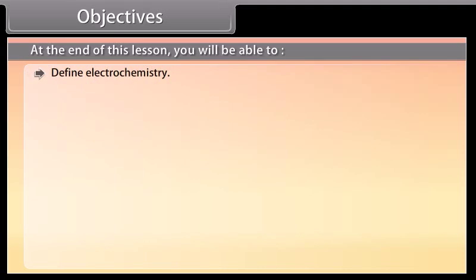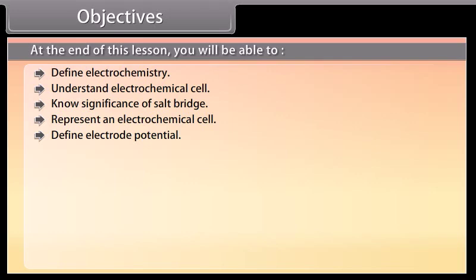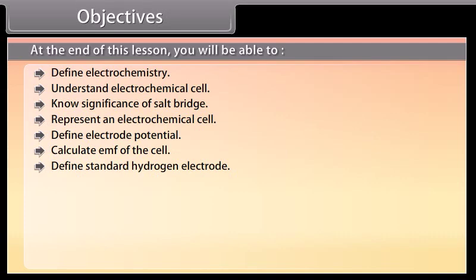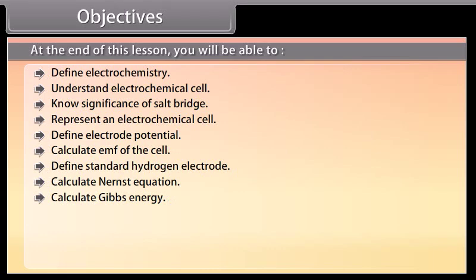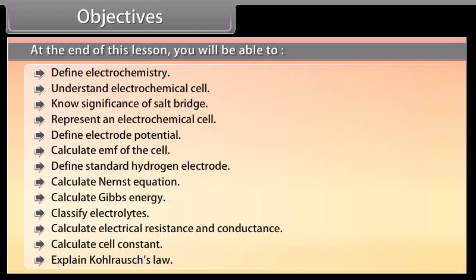Objectives. At the end of this lesson, you will be able to: define electrochemistry, understand electrochemical cell, know significance of salt bridge, represent an electrochemical cell, define electrode potential, calculate EMF of the cell, define standard hydrogen electrode, calculate Nernst equation, calculate Gibbs energy, classify electrolytes, calculate electrical resistance and conductance, calculate cell constant, and explain Kohlrausch's law.